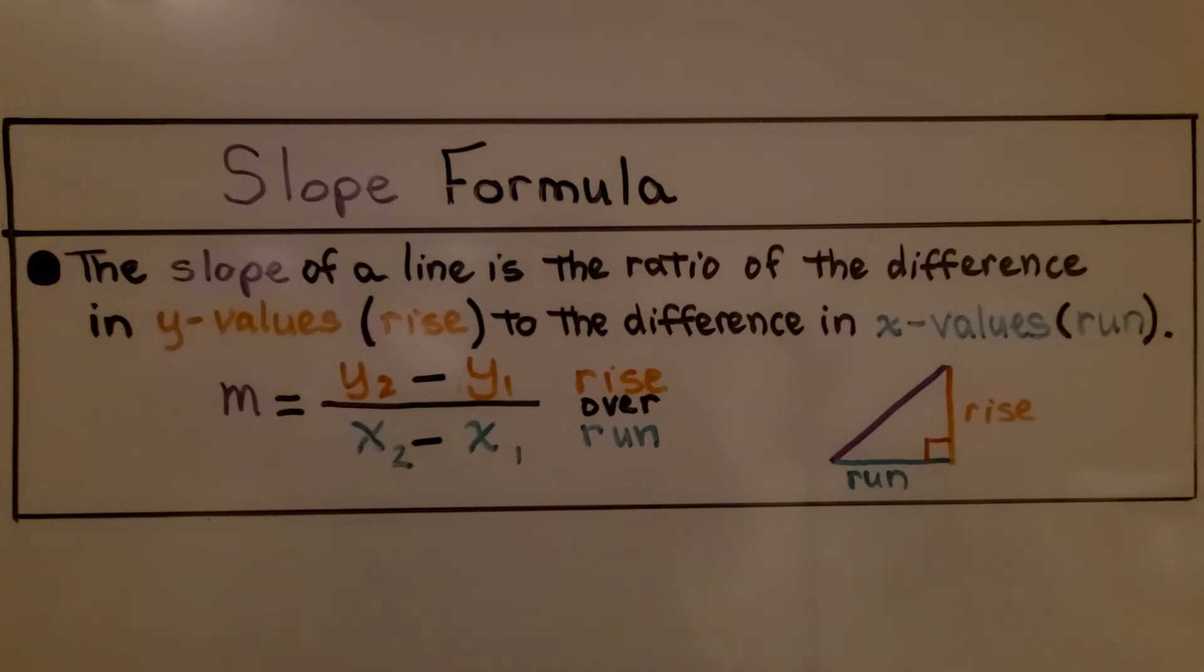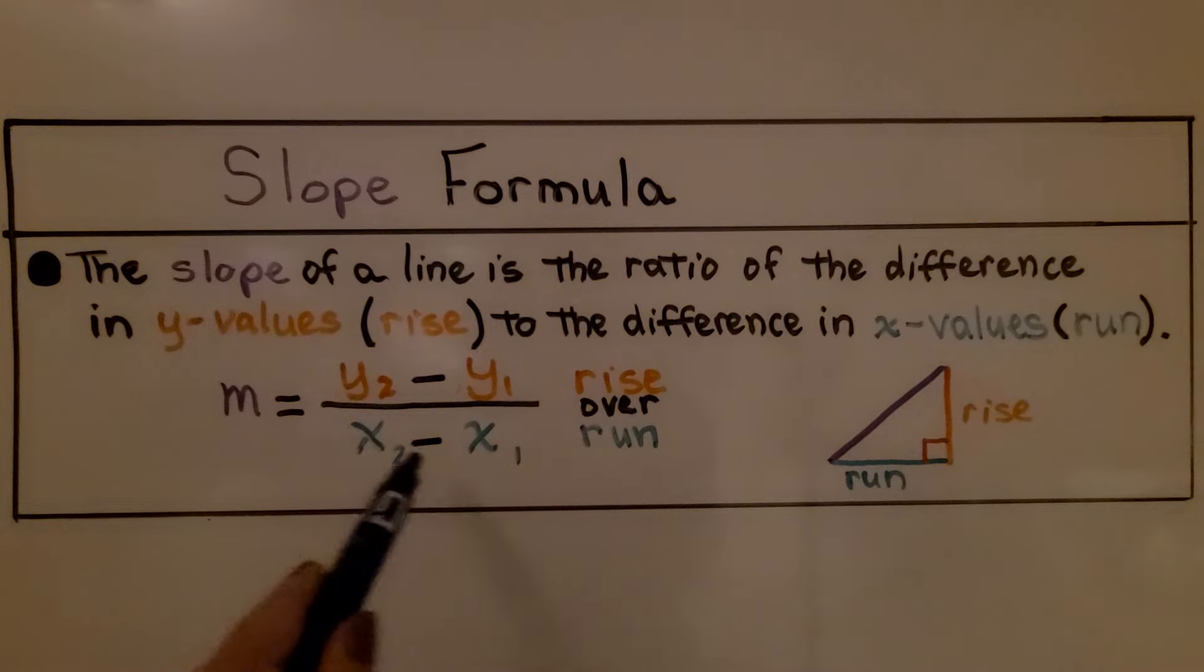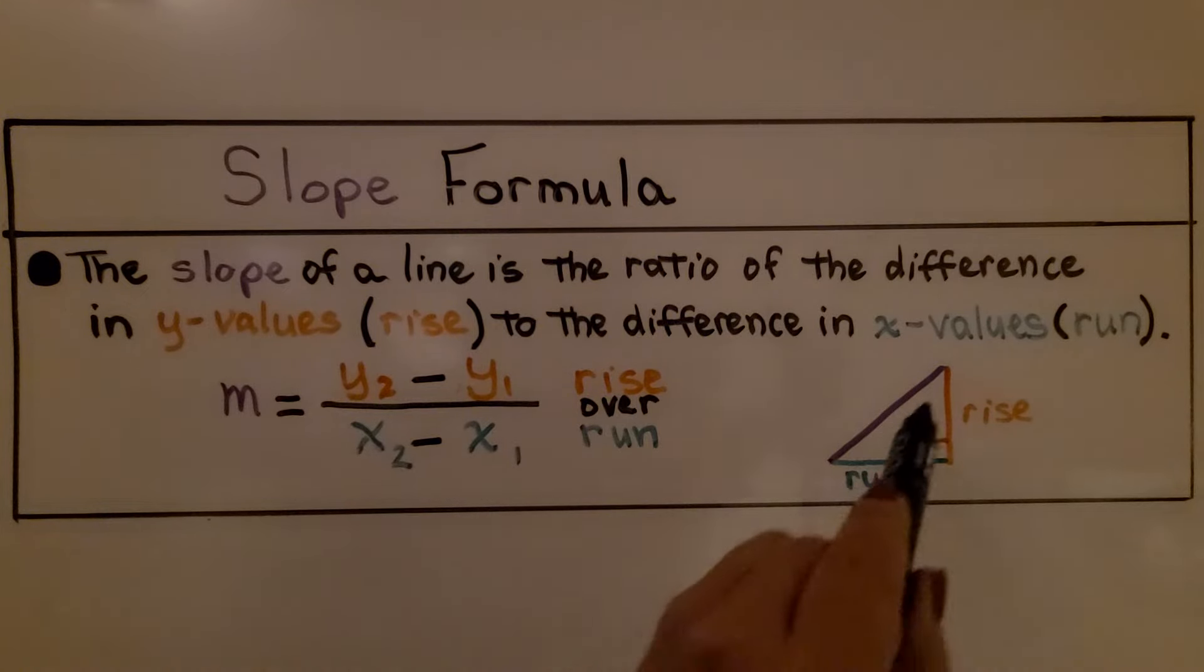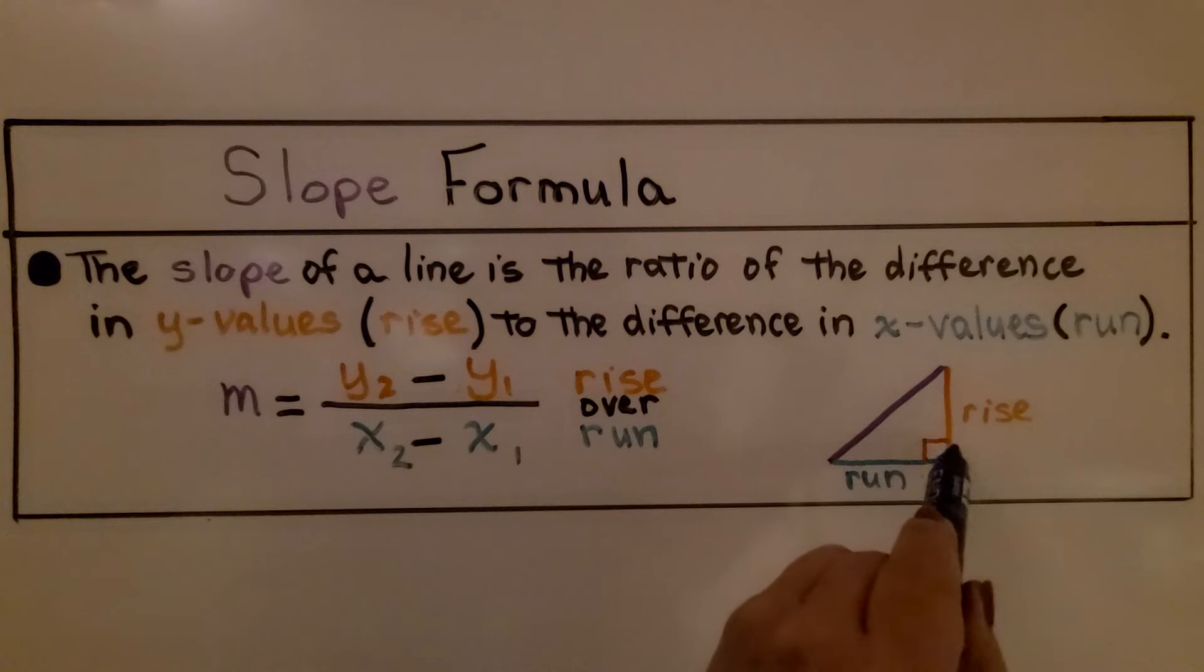So we learned in the last video that the slope of a line is the ratio of the difference in the y values, the rise, to the difference in the x values, the run. We're going to use the hypotenuse as the line, and we're going to have our rise and our run, and we're going to have a right triangle.